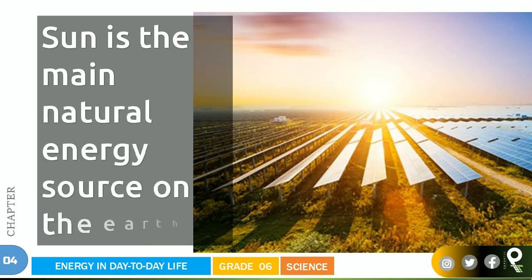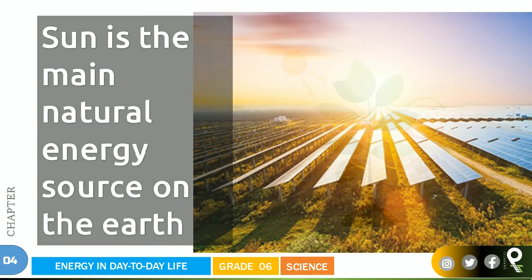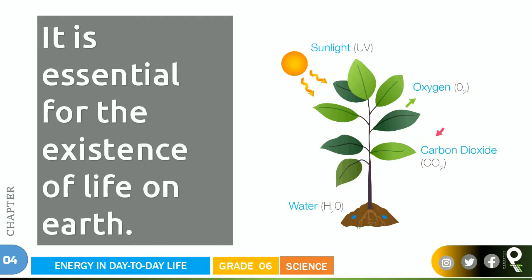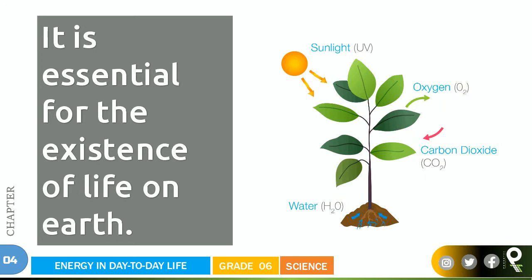The sun is the main natural energy source on the earth. It is essential for the existence of life on earth — that makes it a very important one. If the sunlight is there, people are living peacefully. If the sunlight is not there, all the earth will definitely collapse.